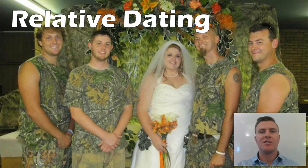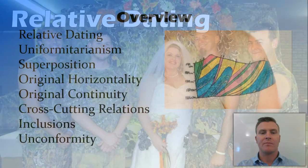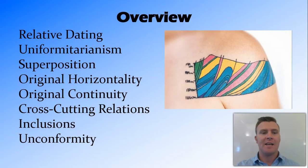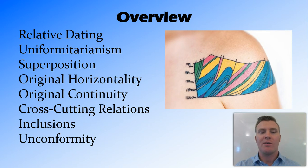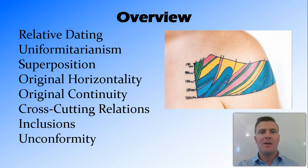In this video we're going to talk about relative dating — we're going to define what it is and then look at some of the rules for it. There are going to be some big words: uniformitarianism, superposition, original horizontality, original continuity, cross-cutting relations, inclusions, and unconformity. These words are big but the principles behind them are fairly easy to follow.